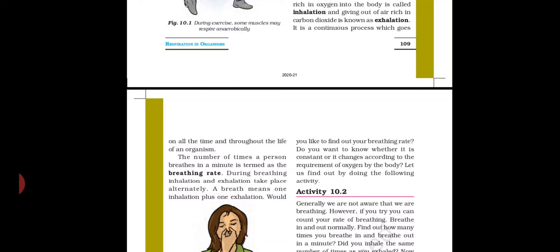During breathing, inhalation and exhalation take place alternatively. One breath means one inhalation plus one exhalation. We count one full breath — inhale and exhale together — as one breathing rate count. You have to count how many times you breathe in a minute. You can find out your breathing rate and see whether it is constant or changes according to the body's requirement for oxygen. Let us find out by doing the following activity.